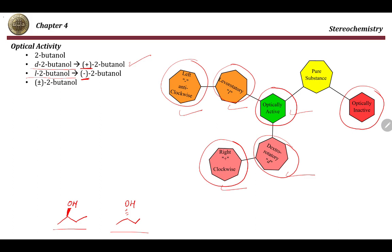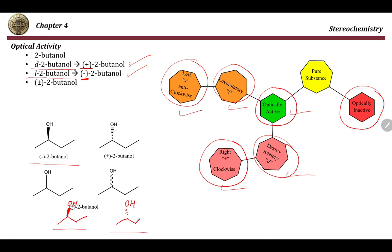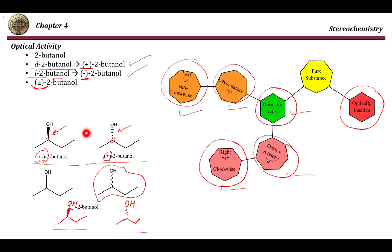We have D or (+)-2-butanol and L or (−)-2-butanol. It is important to note that it is not always the case that a dashed bond is negative and a wedged bond is positive — this can only be determined experimentally. Another compound could have a dashed bond and be positive, or a wedged bond and be negative. When a compound is drawn showing both forms, this indicates a mixture of both the positive and negative 2-butanol.